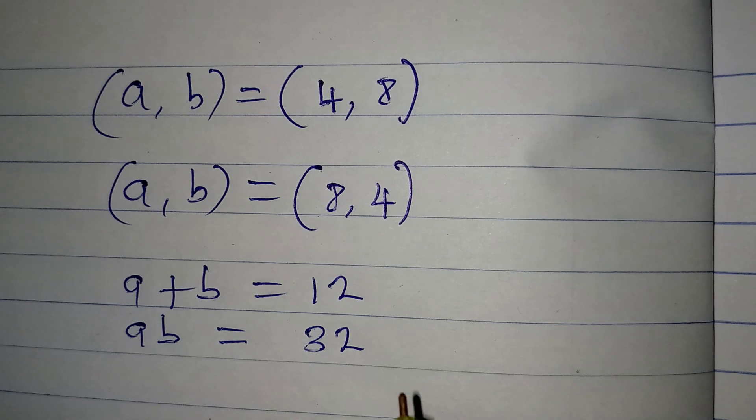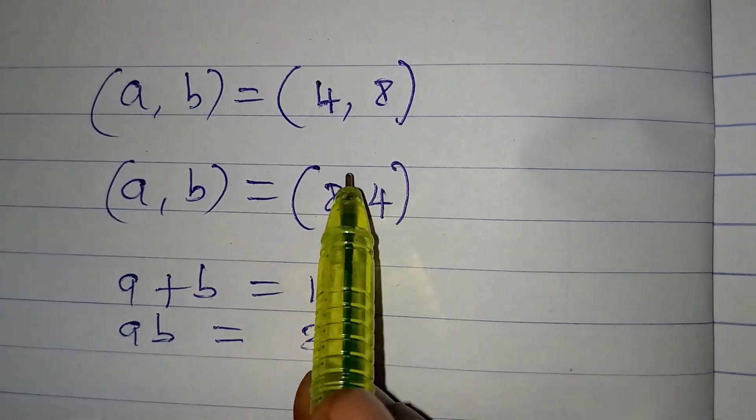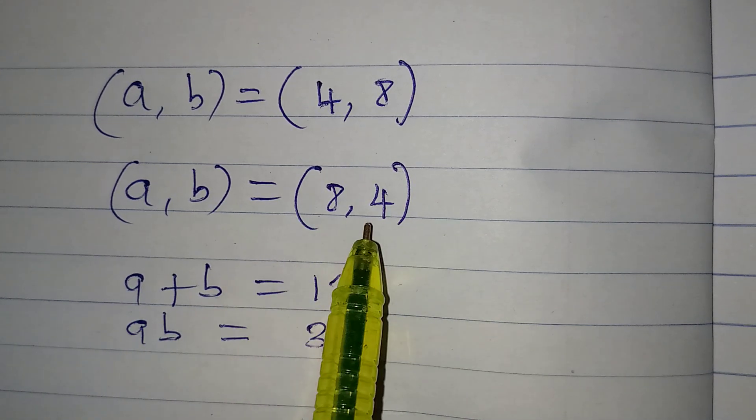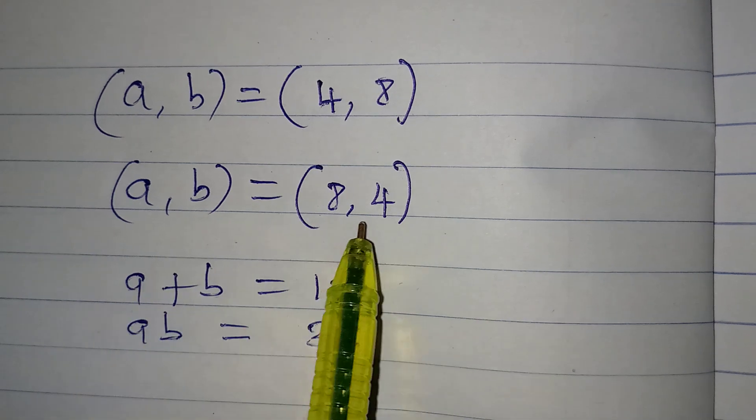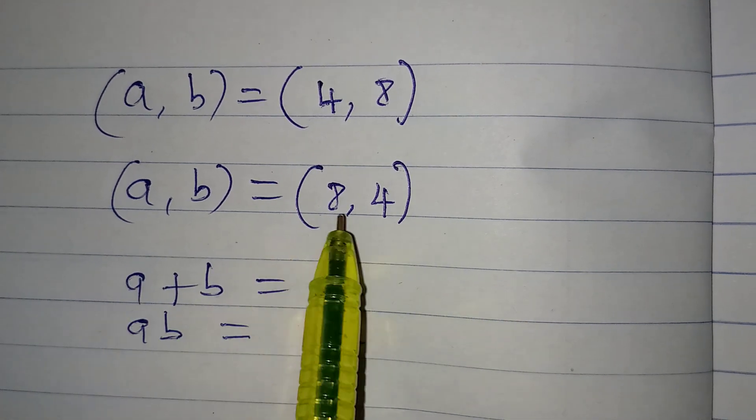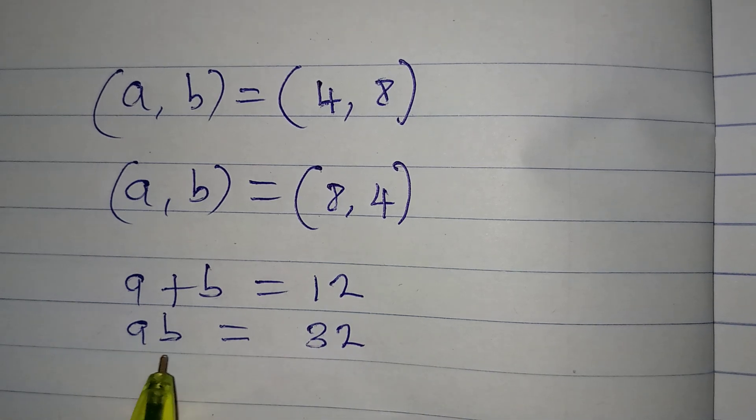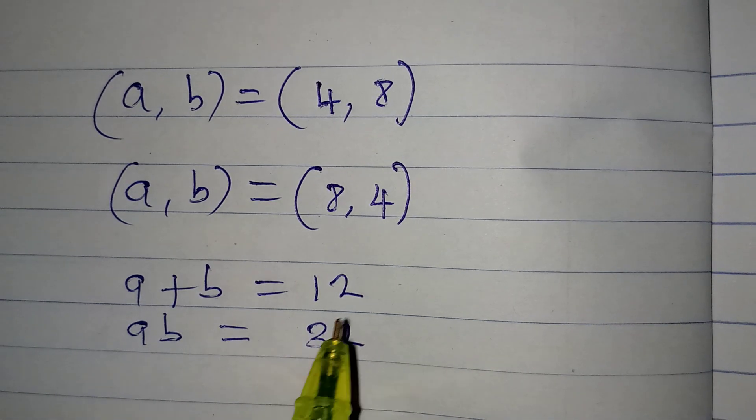But then, if you also decide to work with this, in place of A now, you have 4, and then in place of B, you're going to have 8. In place of B, you have 4. So, 8 plus 4 is 12, then 8 times 4 will still give us 32.